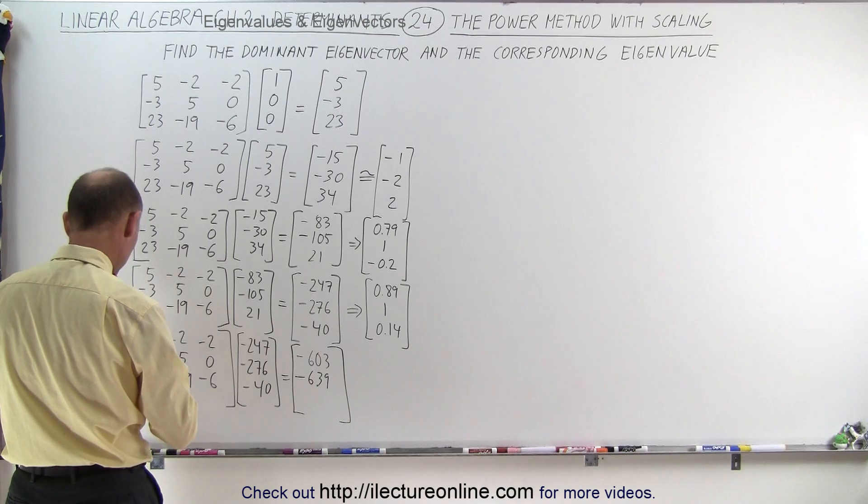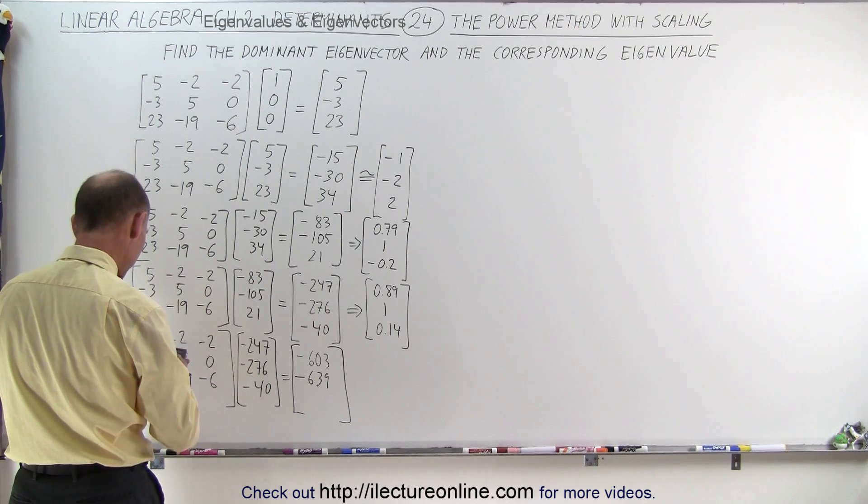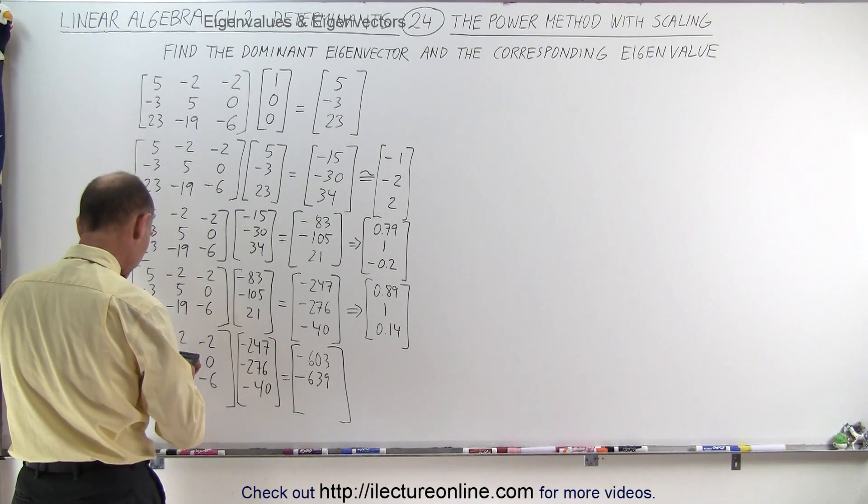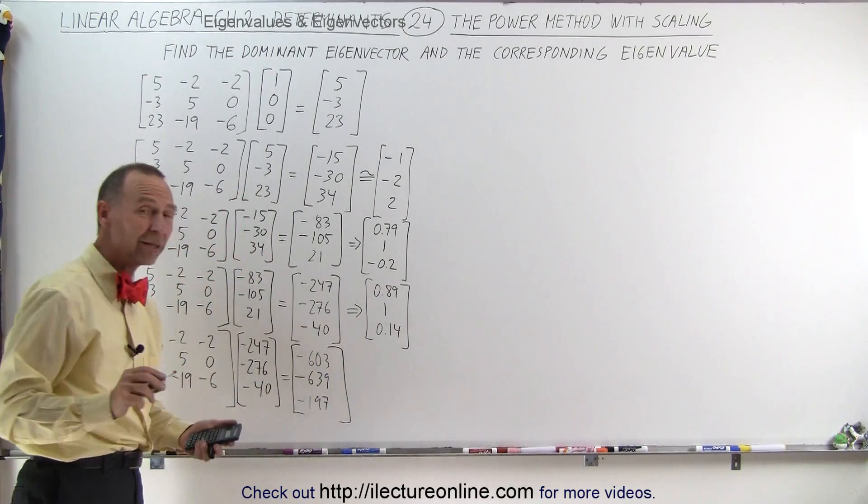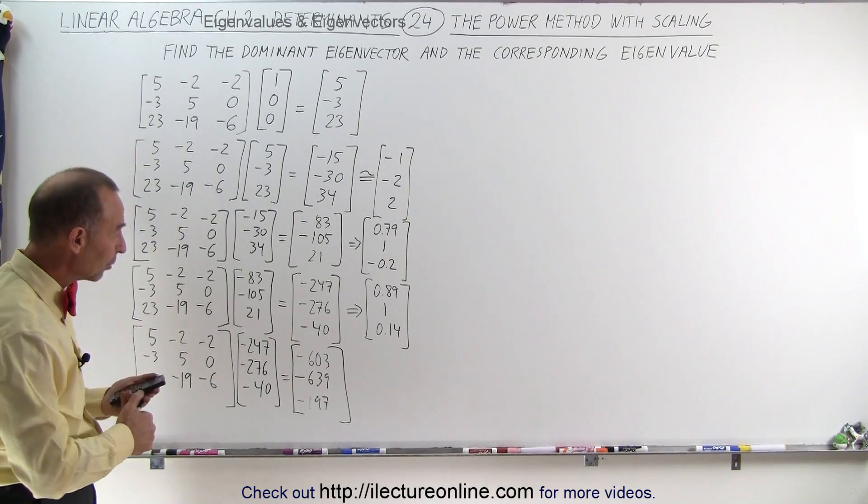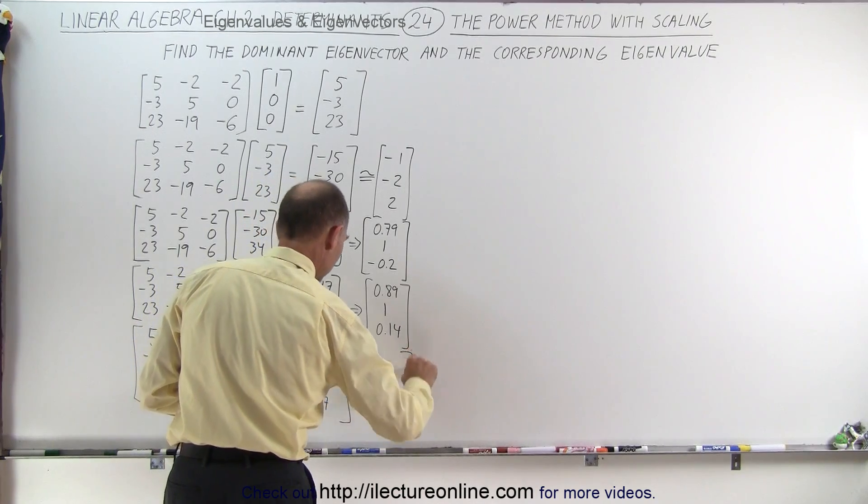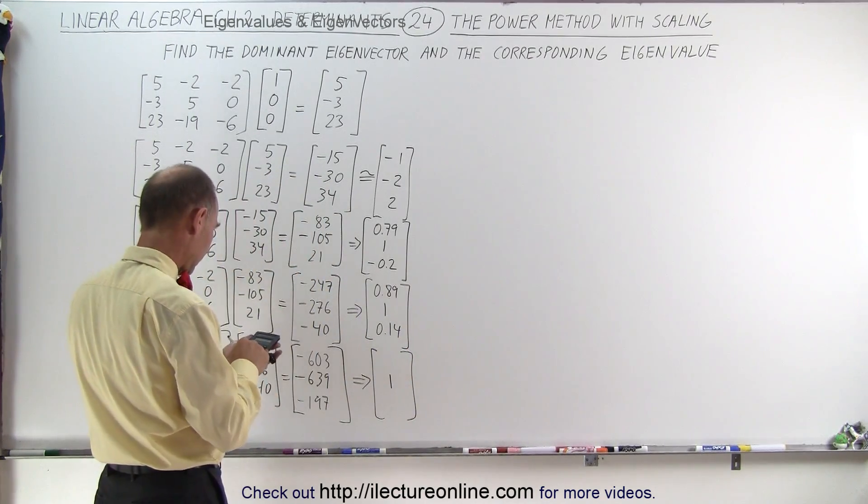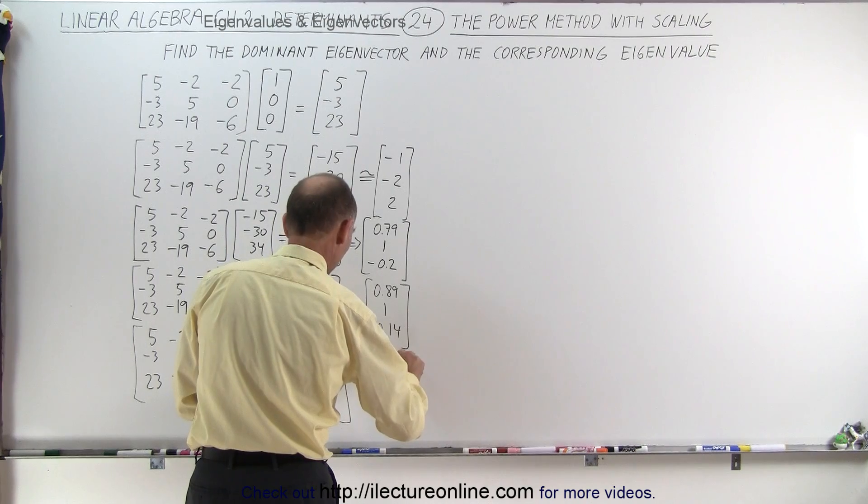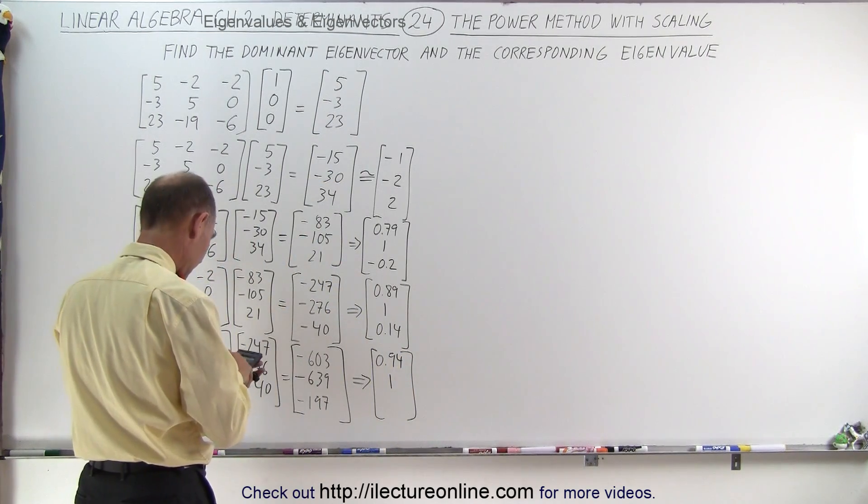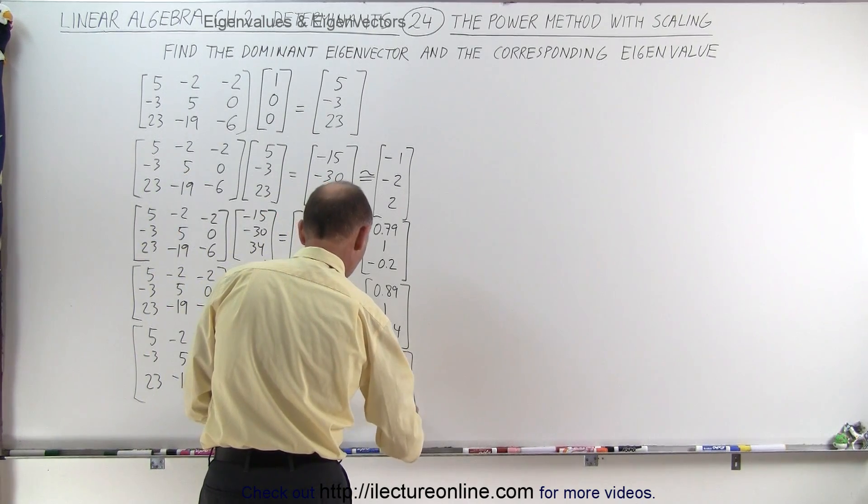23 times 247. The next number is plus 19 times 276. And finally, plus 240. And it's minus 197. Now, this is beginning to look like something. So again, I'm going to divide all numbers by a minus 639 and see what that reduces to. This will become a 1. This becomes a 0.94. And it's 0.31.